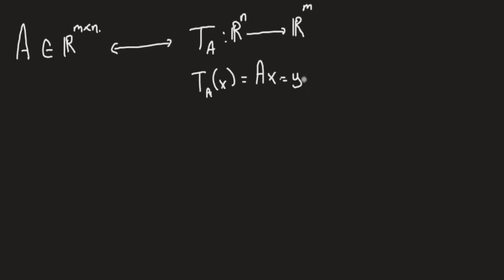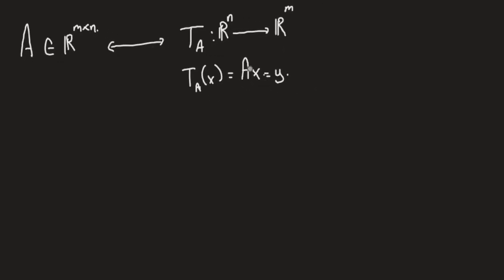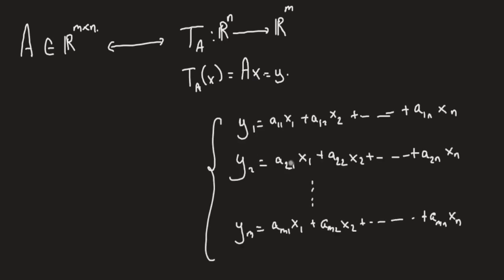Denoting the output as y for simplicity, we can expand this multiplication A·x to get the following system of linear equations: y1 down to yn denote the components of vector y, and x1 down to xn denote the components of x. Now, since this linear transformation is a specific type of function A·x, it has the following property that you can prove easily.